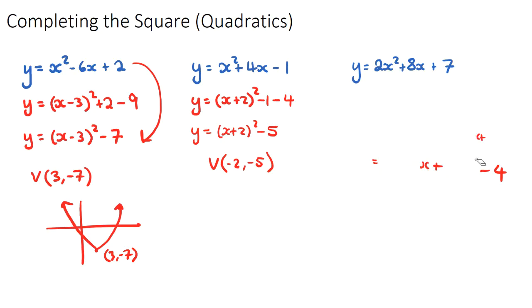Okay, so this last example, this is a bit of a trickier one. If we have a value here in front of our x squared, which is not one, it's two, for example, we need to do a little bit of an extra step. So we have y equals, what we want to do is we want to factor out the two, whatever this a value is, a, b, c, from the first two terms. So we're going to have two bracket x squared plus four x, and then we have our remaining constant plus seven. And then we need to complete the square with this here.